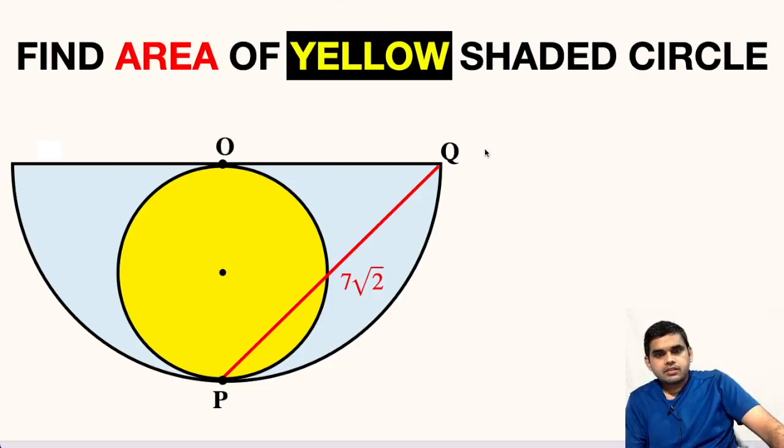In this question, we have a semicircle with center at O and inside it we have a circle shaded in yellow color. Let its center point be M.